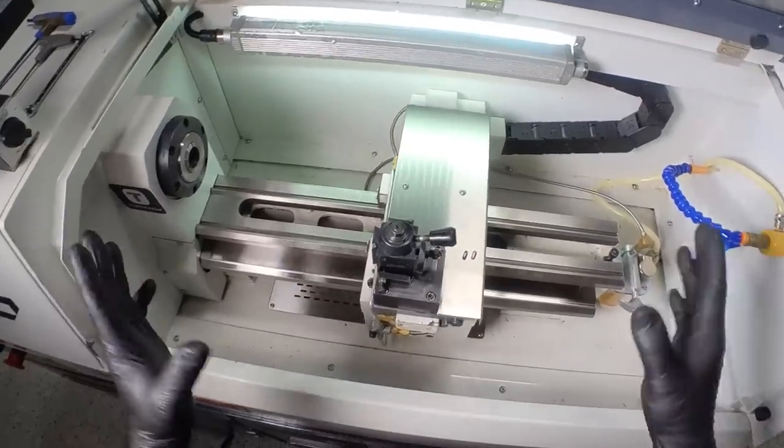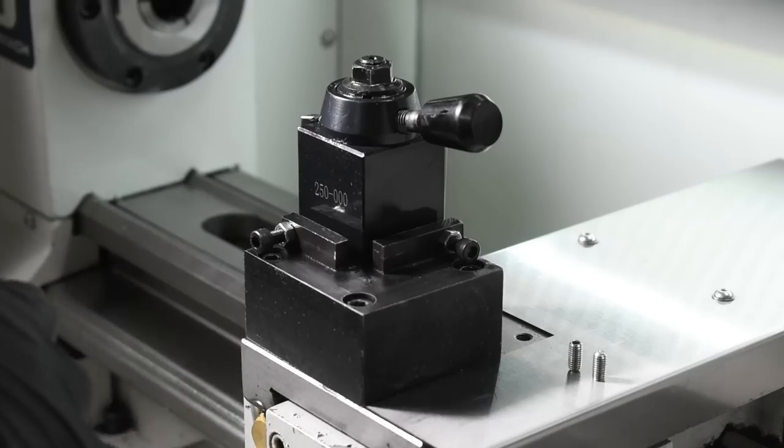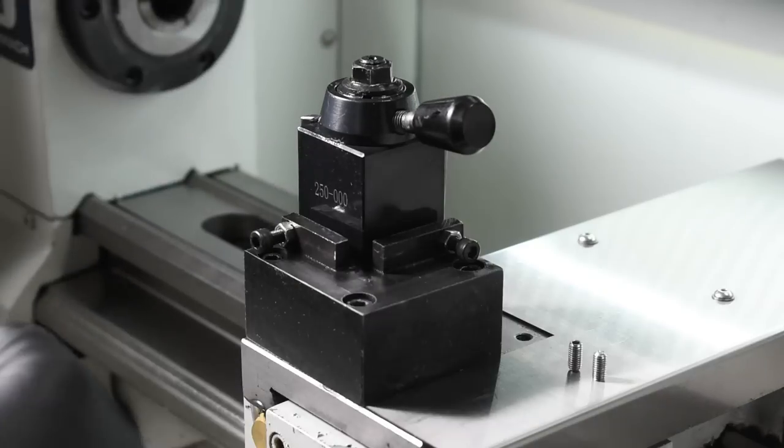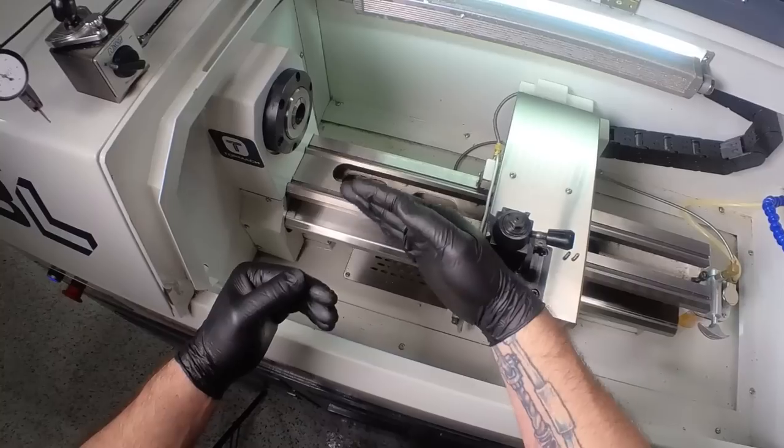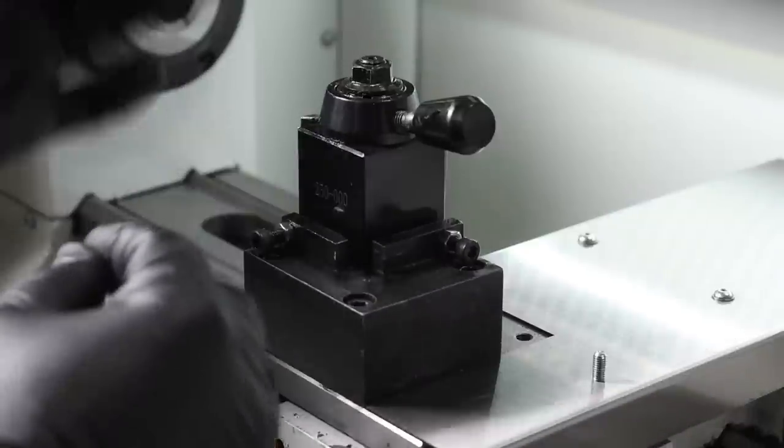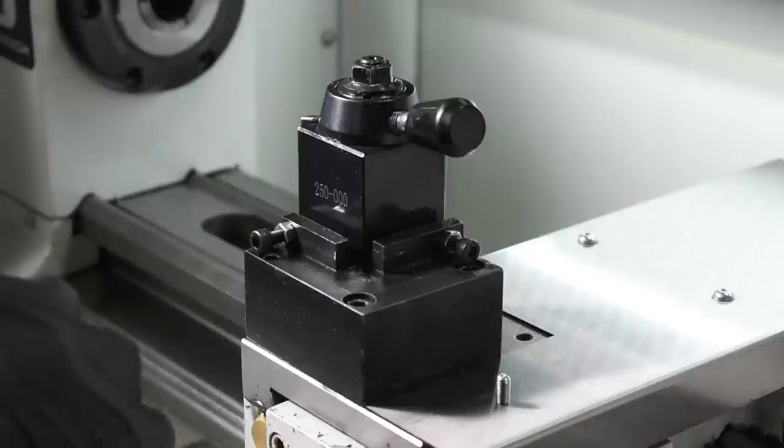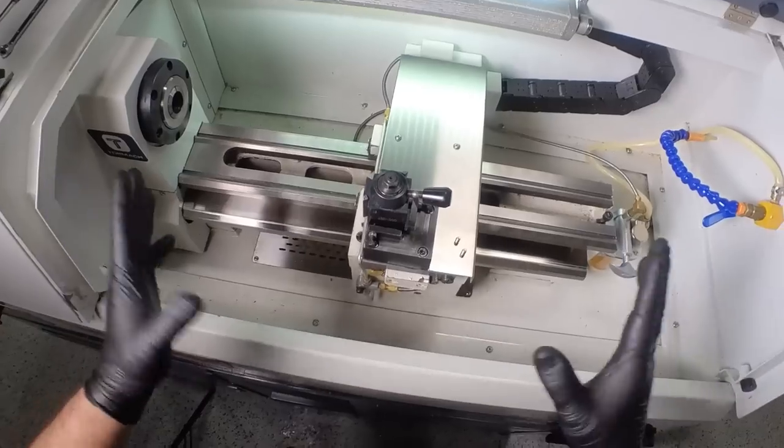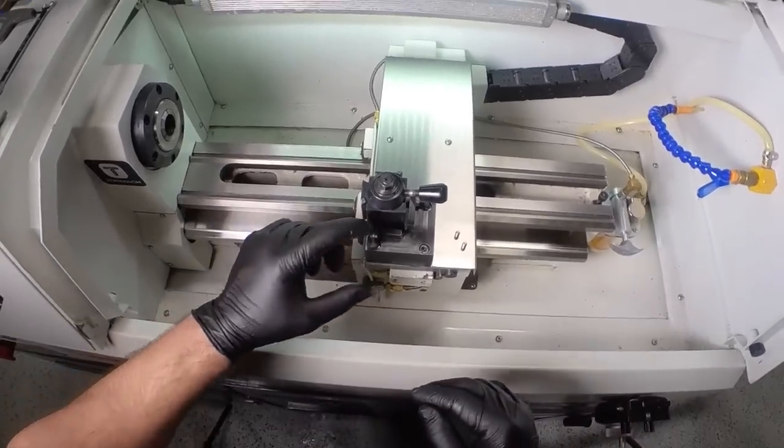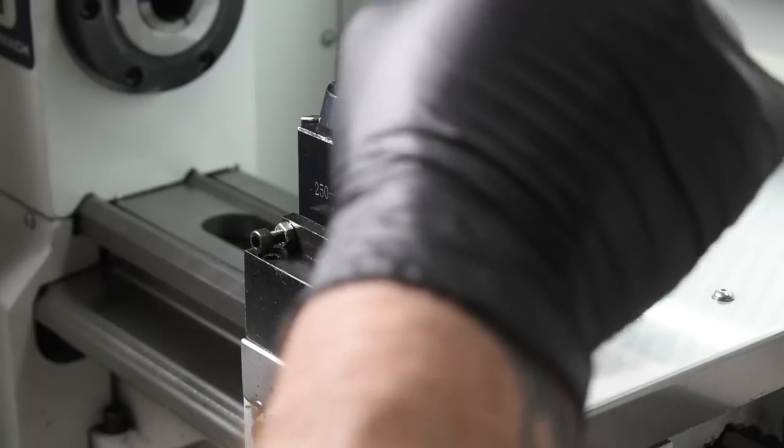Before we start getting into the capabilities of this machine, we should probably go over some of the limitations and issues I've had. One of the main issues was with this quick change tool post moving, the angle of it moving. Whenever that happens, you actually have to reset the offset of your tools because the angle will change the distance of the tool to the workpiece. Stock, this machine comes with M5 set screws to hold the angle along with a small bolt through the middle. What I ended up doing was replacing those with M5 button head bolts and also used a jam nut. That way I could keep pressure on these bolts and the quick change tool post didn't move nearly as much.